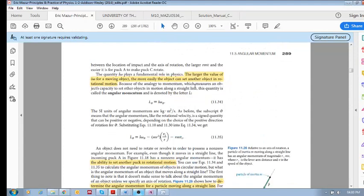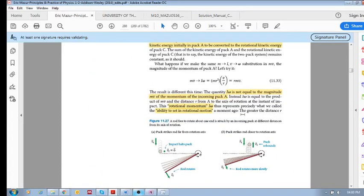So the larger the value of I omega for a moving object, the more easily the object can set another object in motion. Okay, so this object is moving with a momentum of mv, a linear momentum, straight-line momentum mv. But the ability for it to cause this rod to have rotational motion, that ability is dependent on the radius, how far from this axis of rotation it hits the rod.